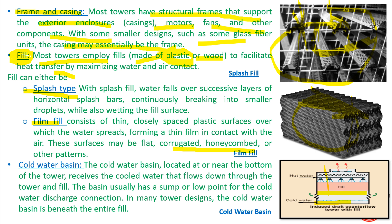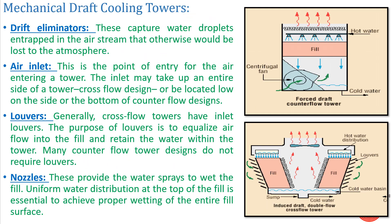Next is your cold water basin. The cold water basin is basically a storage tank below the cooling tower in which cold water is stored. Hot water enters from the top, passes through the fill, and the cold water basin is at the bottom. Its size depends upon the water capacity — the amount of water that will be handled by your cooling tower.